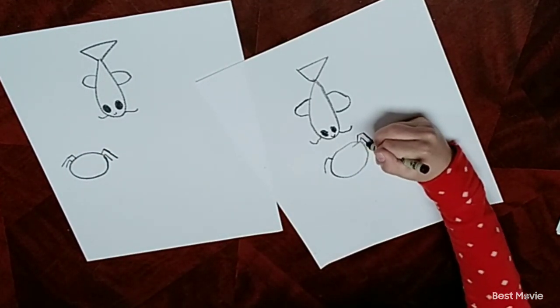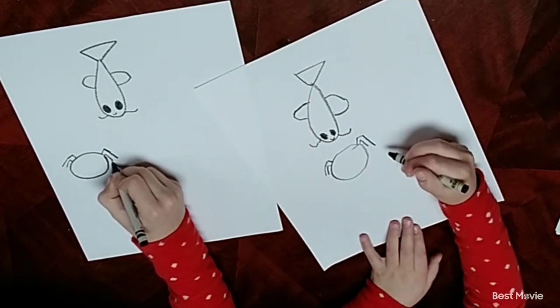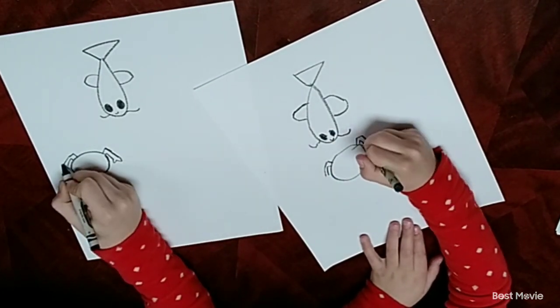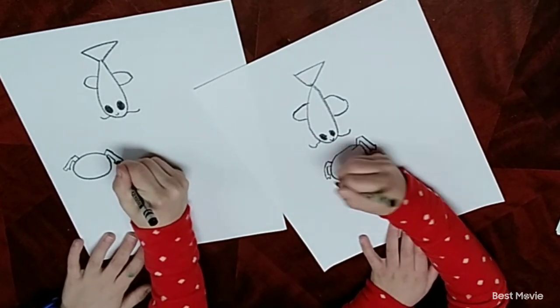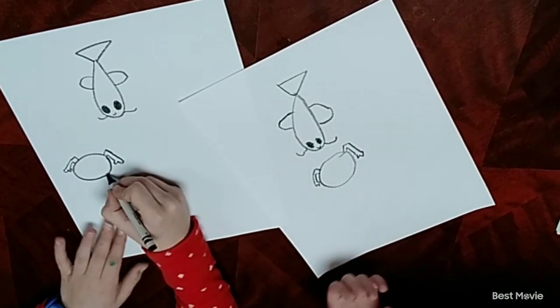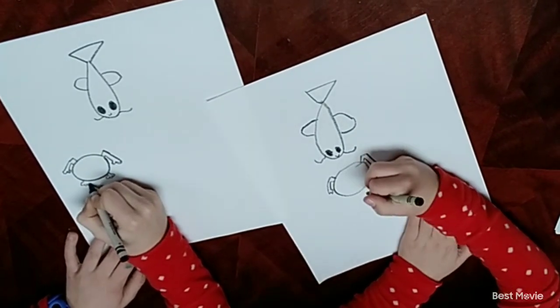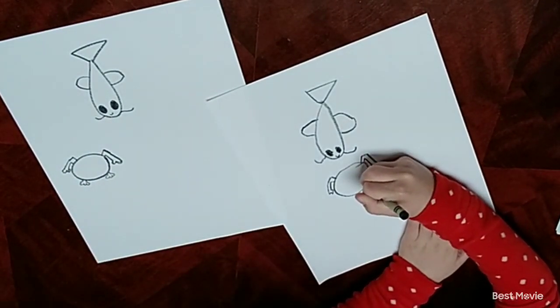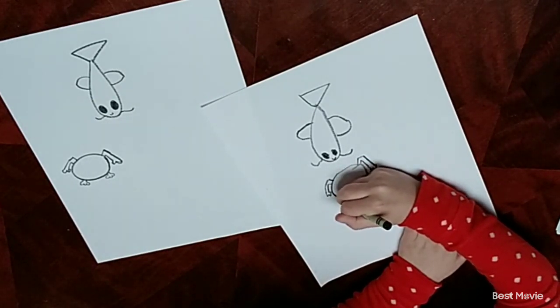Now every leg of course needs its feet. So you're going to draw two little pointy things. Each of them. You can also make them a curve or something. So it's little feet. Now you can draw little hands right here. Pause the video if you need more time.